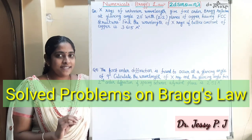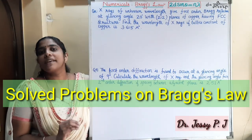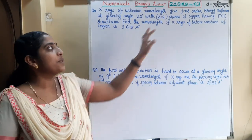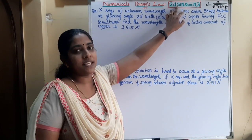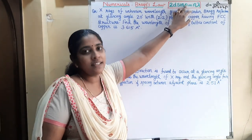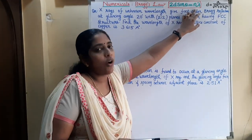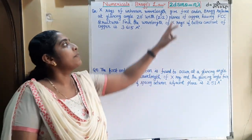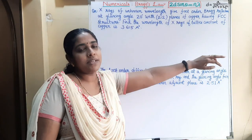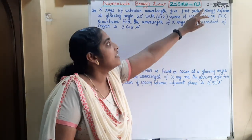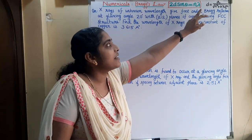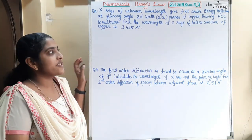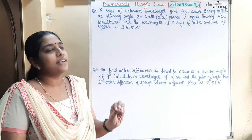Hi all, today we will discuss numericals based on Bragg's law. Bragg's law states that 2D sin theta equals N lambda, where D is the interplanar spacing, theta is the glancing angle (Bragg angle), N is the order of diffraction, and lambda is the wavelength of X-ray used. If lattice parameter and Miller indices are given instead of interplanar spacing, we can find D using the formula A divided by root of H squared plus K squared plus L squared.